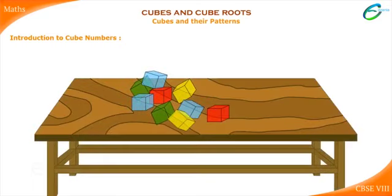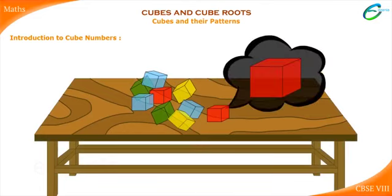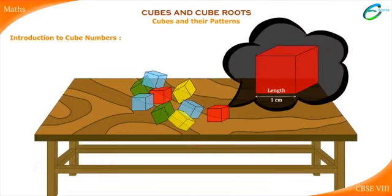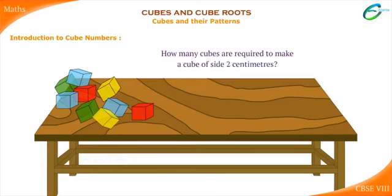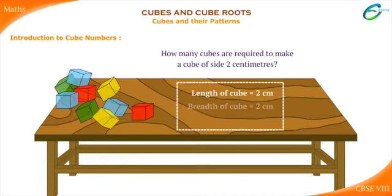Here we have some cubes of side length 1 cm. That means length is equal to 1 cm, breadth is equal to 1 cm, and height is equal to 1 cm. Using how many such cubes can we make a cube of side length 2 cm? The cube should have length equal to 2 cm, breadth equal to 2 cm, and height equal to 2 cm.